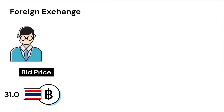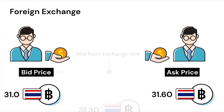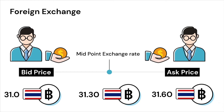In this case, 31 is the bid price — it is the price at which the bank dealer is willing to bid for the product the customer is selling, in this case US dollars. 31.6 is the ask price — it is the price that the bank dealer is asking from the customer for the product he is purchasing, in this case US dollars. And finally, 31.3 is the actual exchange rate, often called the midpoint exchange rate.